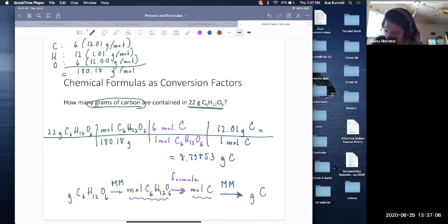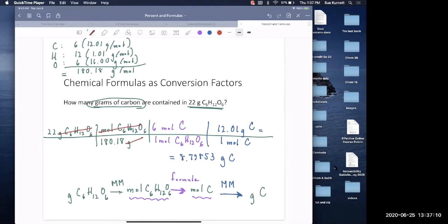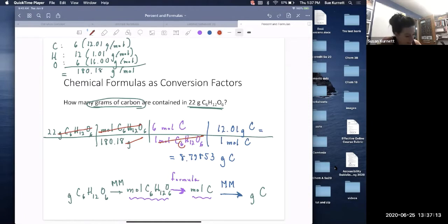Okay, grams of sugar cancel, moles cancel. This six is where this six came from. Moles of carbon cancel and we're left with just grams of carbon. We started with two sig figs. This is two past the decimal, two past the decimal, two past the decimal. So now we have five.